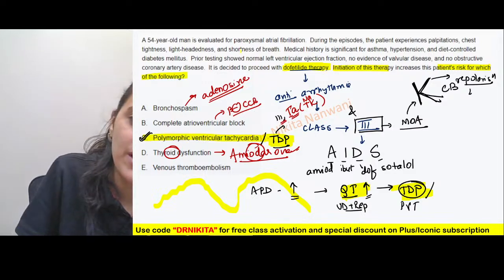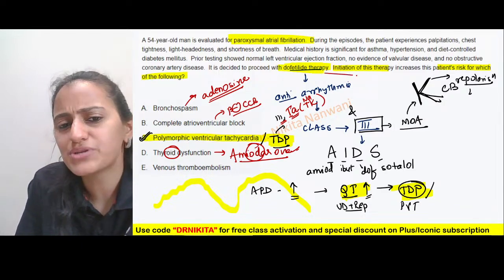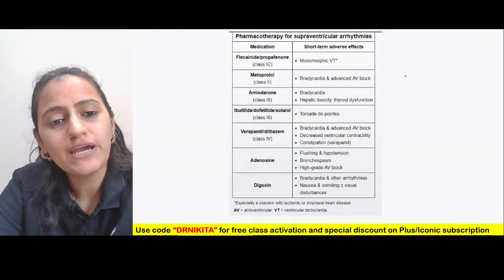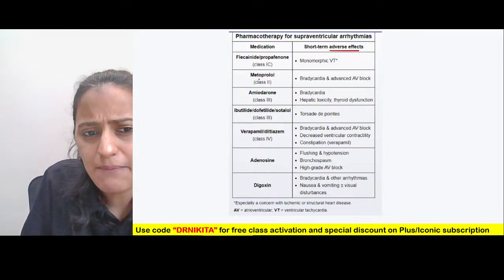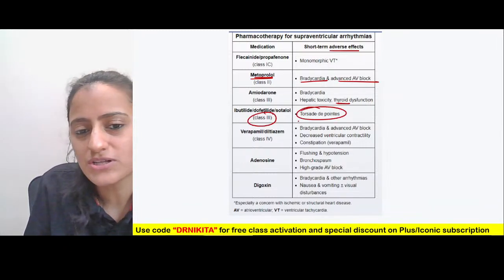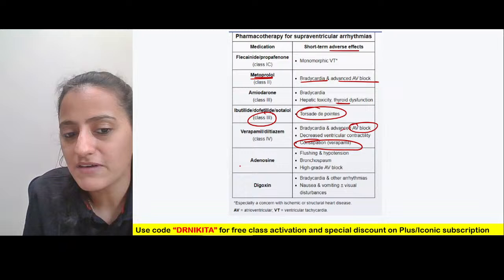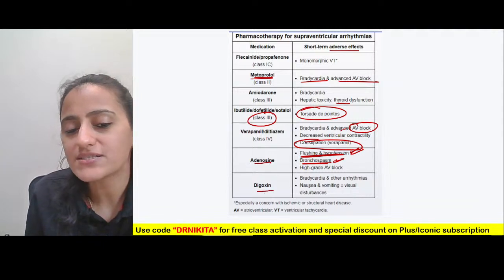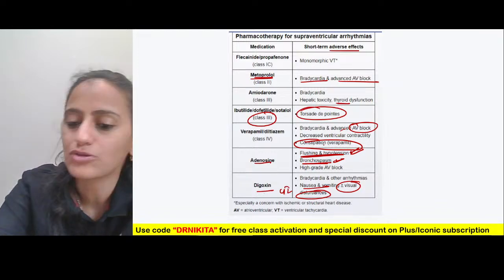Bronchospasm is the side effect of adenosine. AV block is the side effect with beta blockers and calcium channel blockers. Thyroid dysfunction is a side effect with amiodarone — because amiodarone contains iodine in its name. Calcium channel blockers, especially verapamil, can cause constipation and AV block. Adenosine causes bronchospasm, flushing, and hypotension. Digoxin causes GI features and xanthopsia — visual disturbances. Metoprolol causes bradycardia and AV block.